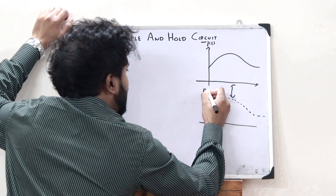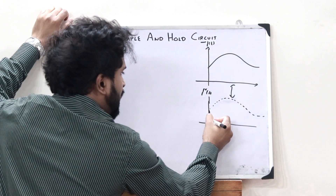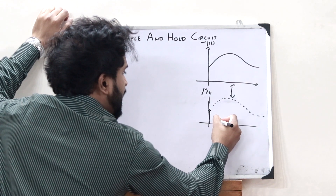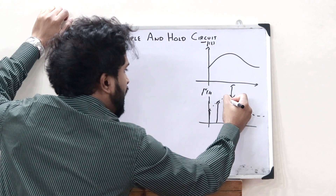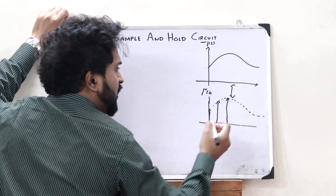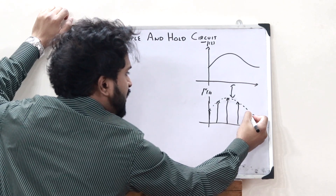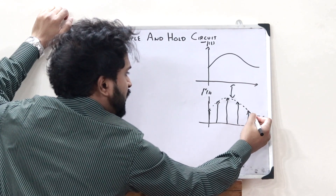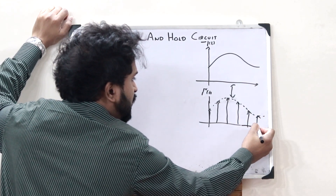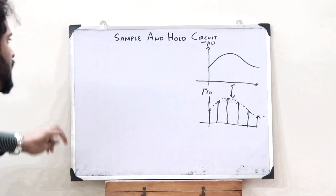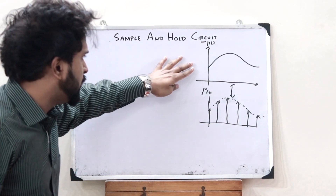Upon sampling, f'(t) becomes: first we would have one sample here, then another sample here, then another sample here, then another sample here, then another sample here — it goes on like that. So this is a sampled signal.